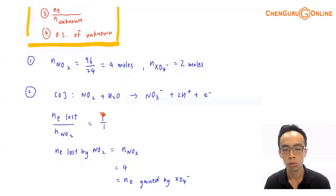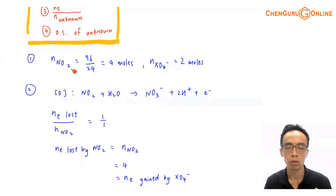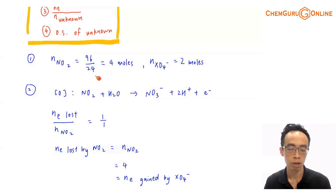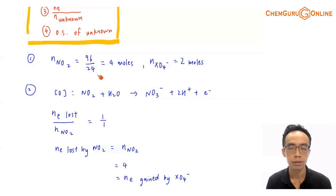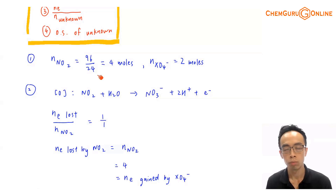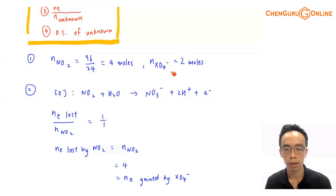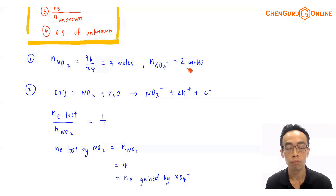Step 1: find the moles of NO2, which is 96 dm³ divided by 24 dm³ — the molar volume of a gas at room temperature and pressure — giving 4 moles. The moles of XO4⁻ is given as 2 moles. Step 1 is done: we have the number of moles of our reactants.